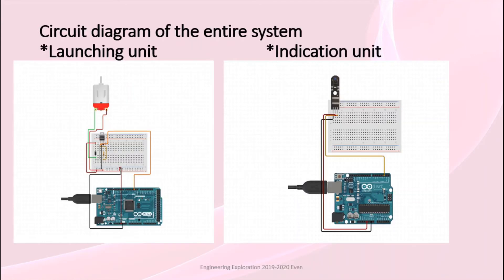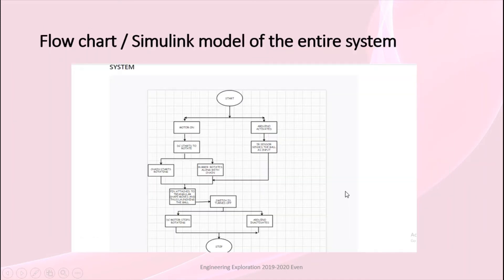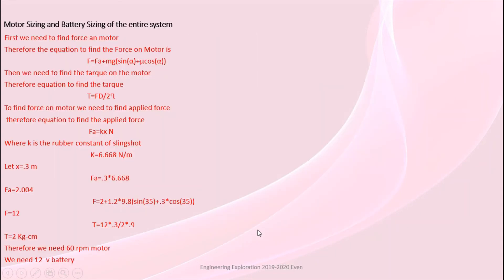Next comes our circuit diagram of the entire system, which includes the launching unit and the indication unit. The launching unit has mainly a motor, and the indication unit has one sensor. This is our flowchart: the machine starts, the motor gets activated, the chain starts rotating, rubber rotates along with the chain, the pin attached to the triangular shape moves, and thus the ball is launched. After launching, the machine switches off and the motor stops rotating.